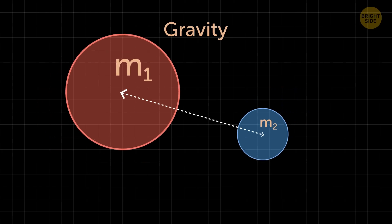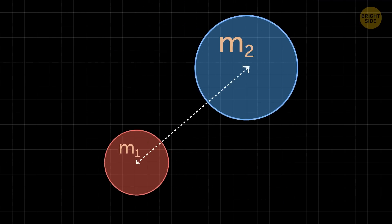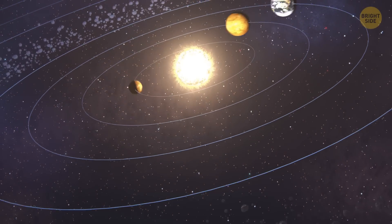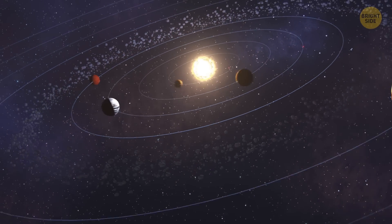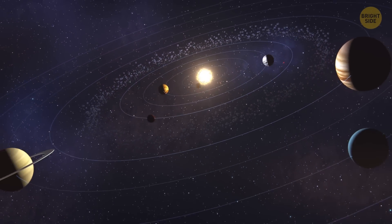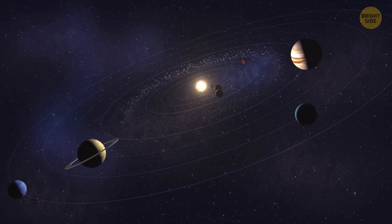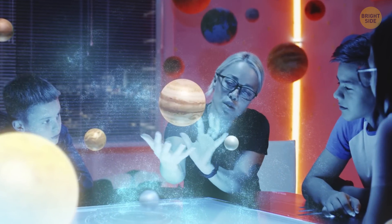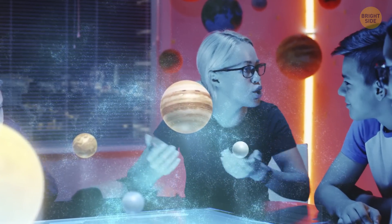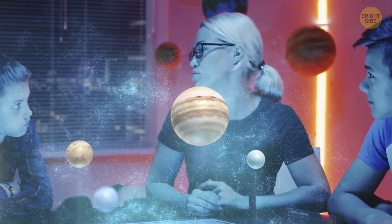But here's where it gets cool. Gravity isn't just a two-object dance. It's a complex space choreography. Take our solar system, for example. The Sun plays the lead role, using its gravitational pull to keep all the planets in their orbits. But each planet also has its own gravitational mojo, tugging at the Sun and even its neighboring planets.